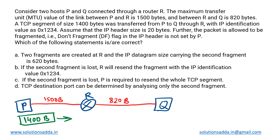This is a computer networks question. We have two hosts P and Q connected through a router R. The maximum transfer unit (MTU) of the link between P and R is 1500 bytes, and for the link between R and Q it is 820 bytes.